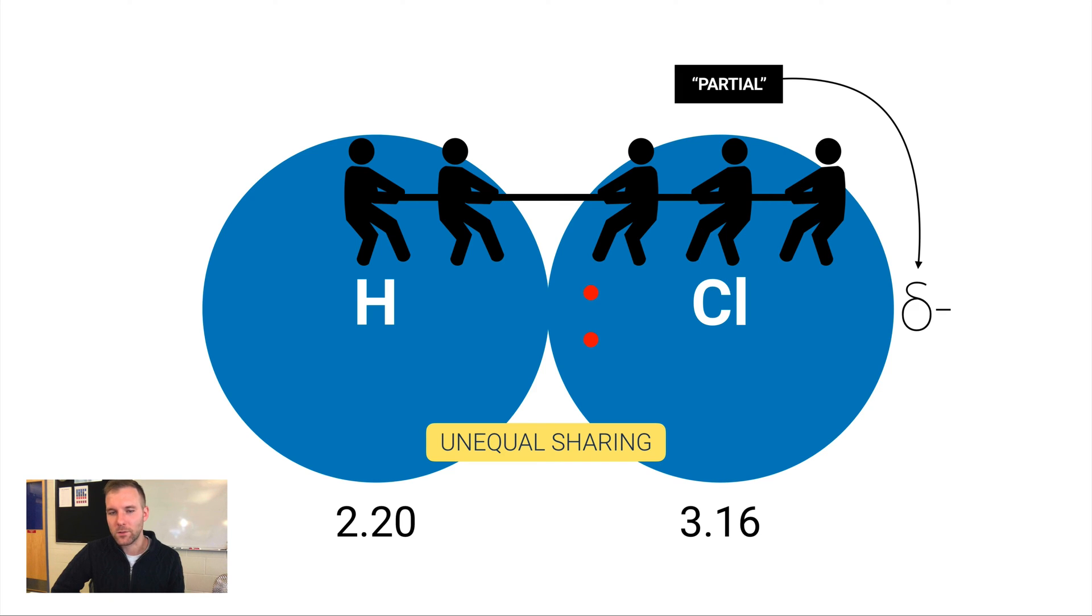If this side is partially negative, that must mean that the other side is partially positive, and that's true too. What you can kind of see here is a little bit of a magnet thing going on. The hydrogen's a little bit positive, the chlorine's a little bit negative, and so these things are fairly good at kind of snapping together, positive and negative sides lining up. So that's a polar covalent bond.